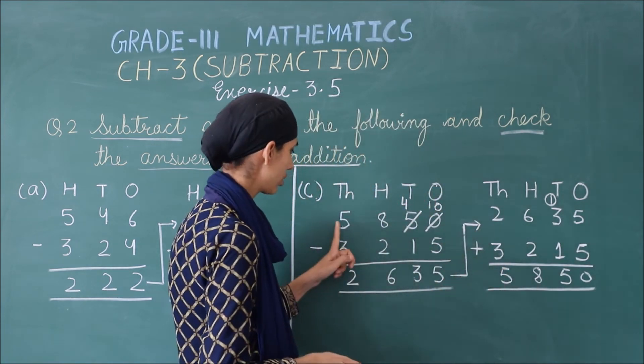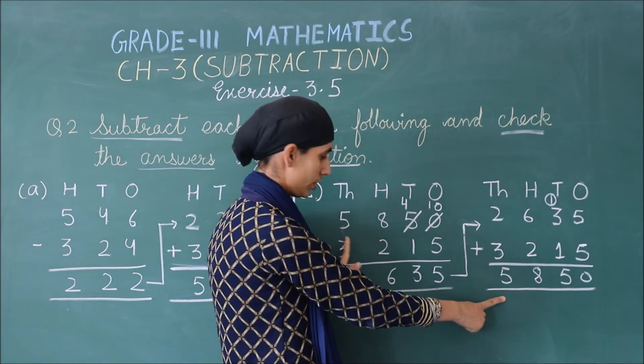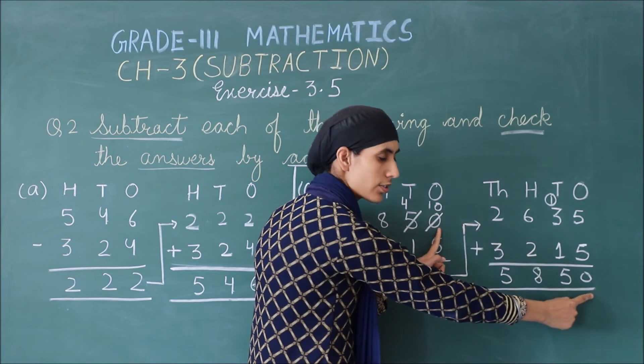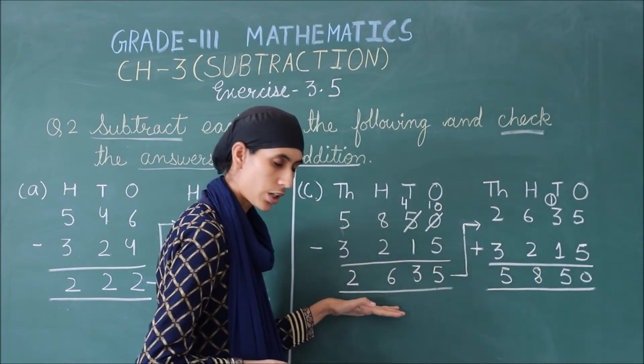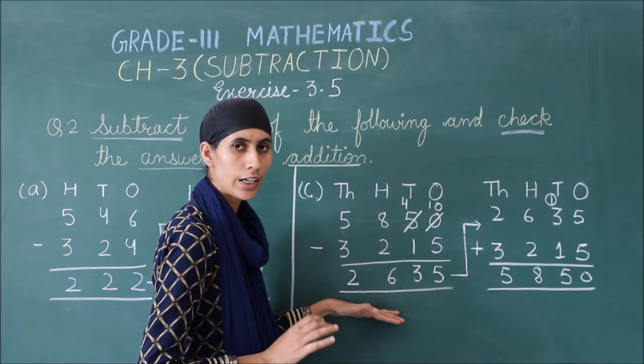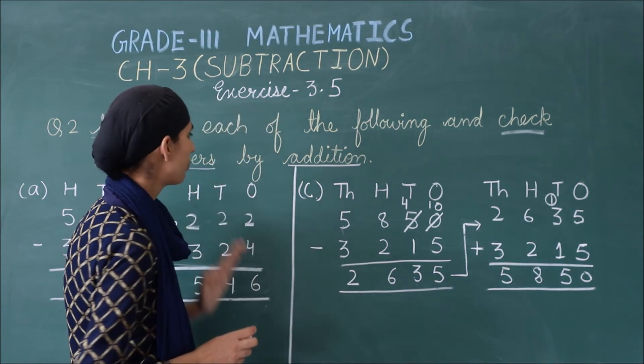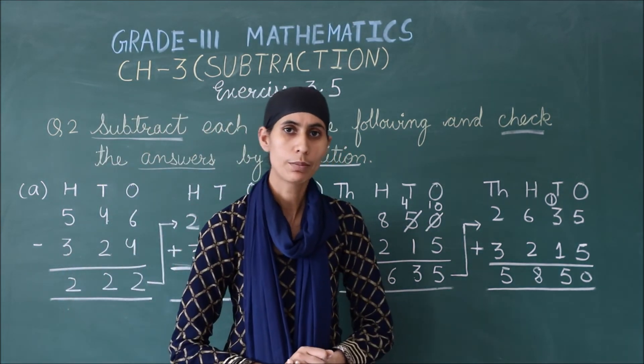Again we match our answer. Here we are having 5, then 8, then next is 5, and then is 0. So it means our subtraction we have found out completely correct, right?